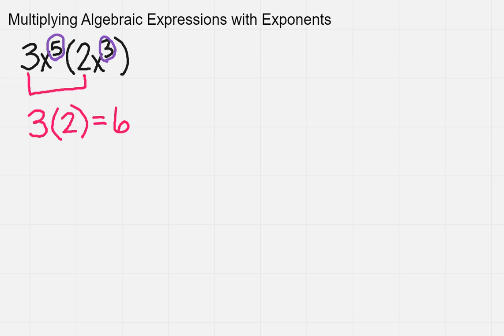Everything else that I see has to do with x's. So now I'm going to multiply my x's together. So I'm going to have x to the 5th times x to the 3rd.